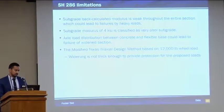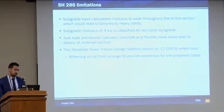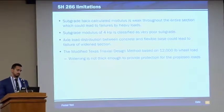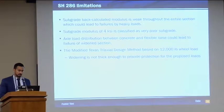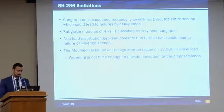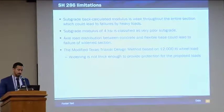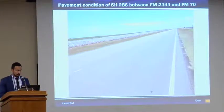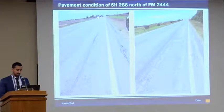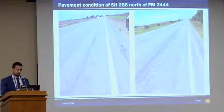So what are the limitations? The subgrade is weak. The axle load distribution between the concrete and the flex base affects the widened section, and we ran a TxAxle check based on the 12,000-pound wheel load — the widening is not thick enough to provide protection for those heavy loads. This is our current condition, and this is the condition of that same road north of the area in question — this is potentially what could happen to the widening.